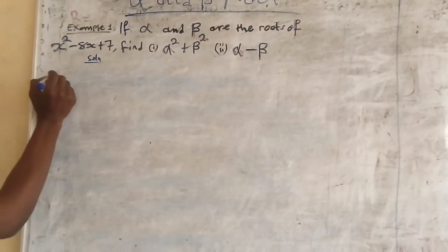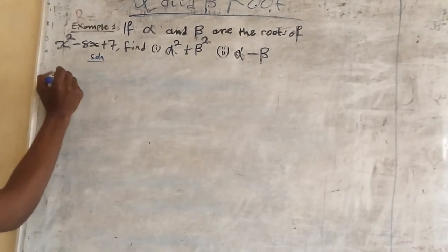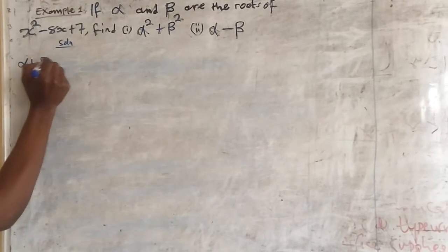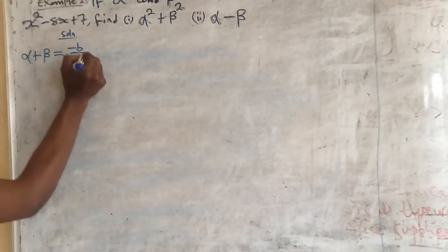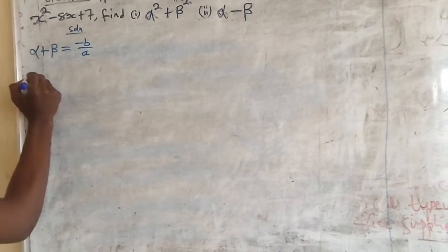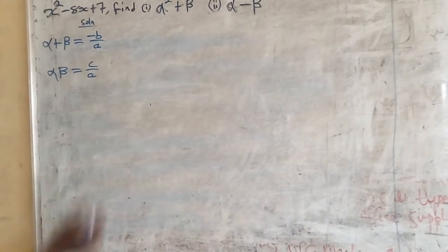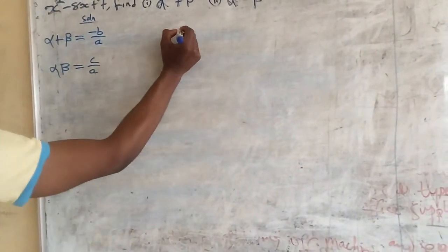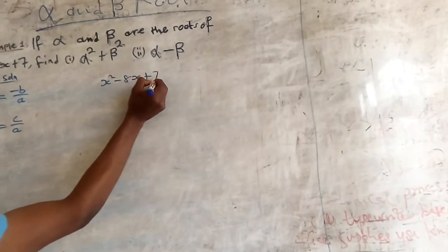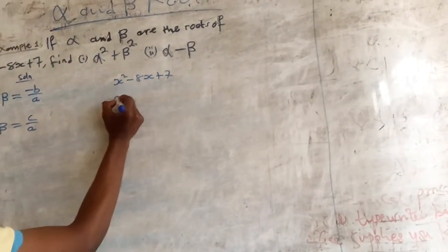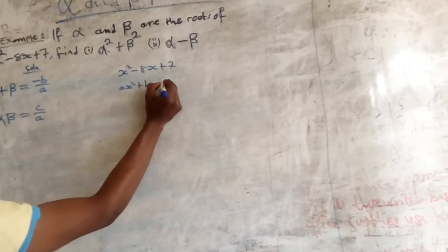Now, we are going to use this formula to solve this. Alpha plus beta is equal to minus b over a, and alpha beta is equal to c over a. This is the expression: x squared minus 8x plus 7, which is in the form ax squared plus bx plus c.